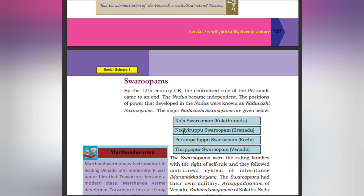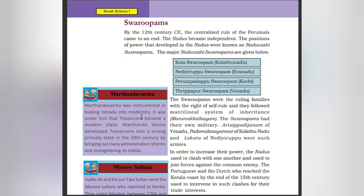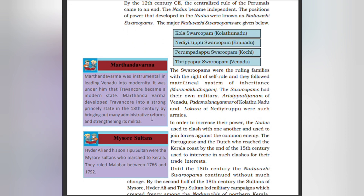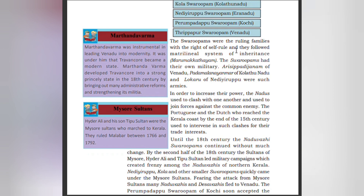The positions of power that developed in the nadus were known as Naduvali Surubhams. The major Naduvali Surubhams were: Kola Surubham of Kolatthu Nadu, Nadiripu Surubham of Eranad, Perimpadapu Surubham of Kochi, and Thrippappur Surubham of Venad. Martandavarma was instrumental in leading Venad to modernity; it was under him that Travancore became a modern state. Martandavarma developed Travancore into a strong princely state in the 18th century through many administrative reforms and by strengthening its militia. Hyder Ali and his son Tipu Sultan brought Malabar under their rule between 1766 and 1792. The surubhams were ruling families with the right of self-rule and they followed the matrilineal system of inheritance. The surubhams had their own military.